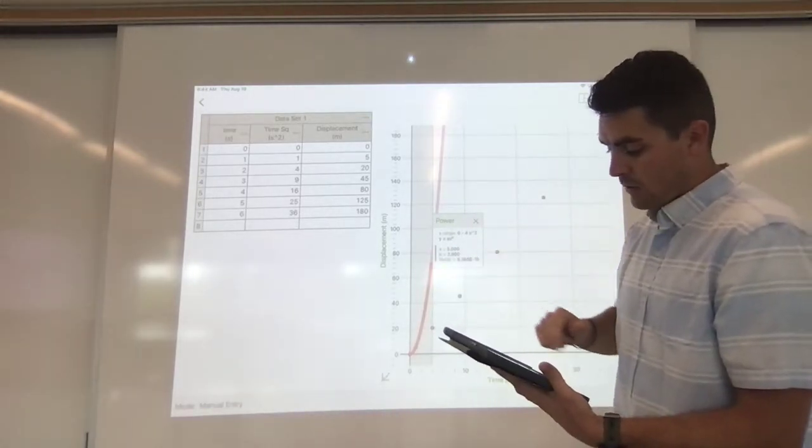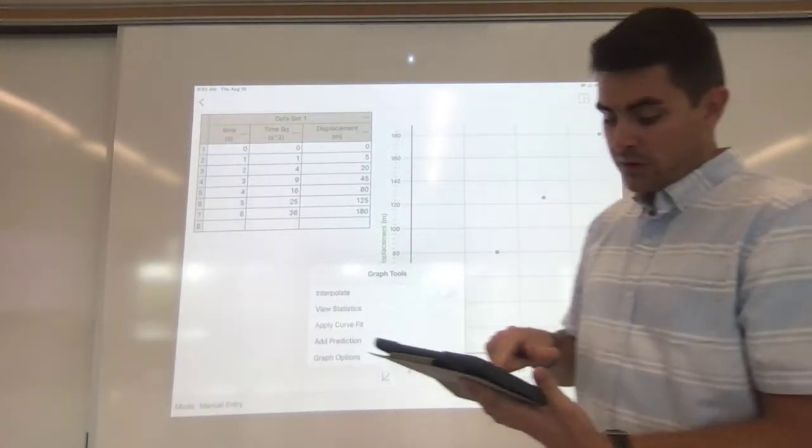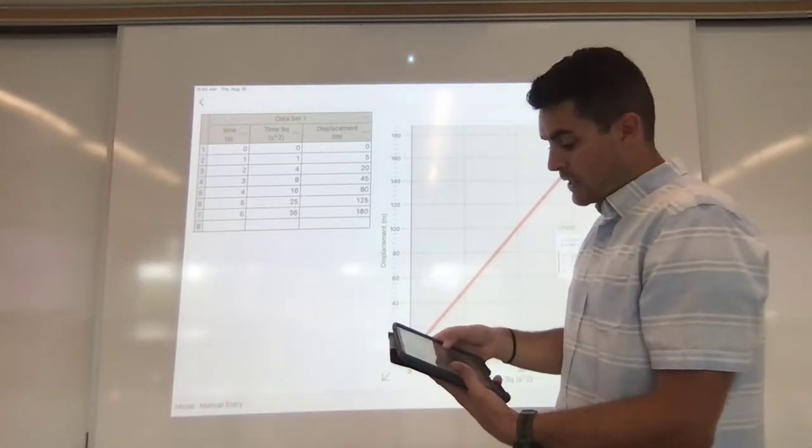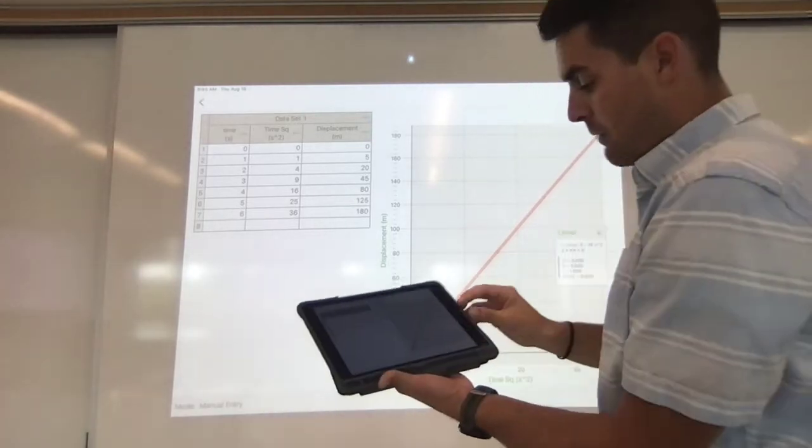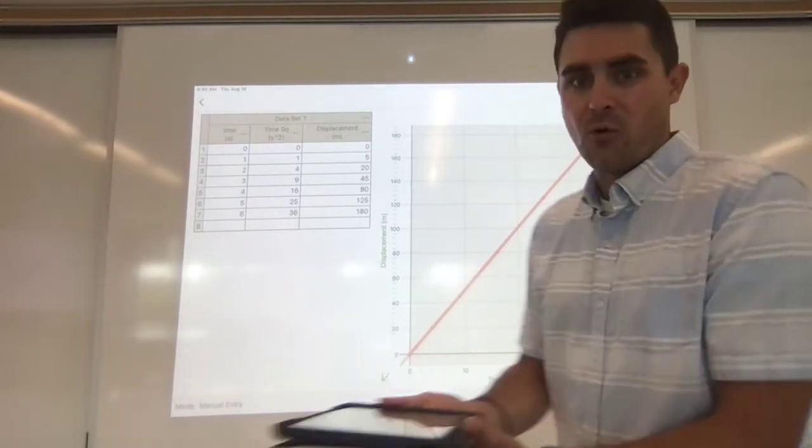So I'm going to get rid of that power function. Now my data looks linear. It's a line. So I can go ahead and apply a linear fit now to my data. And when I do that, I have my slope value, my y-intercept value, all of that stuff is there for me.